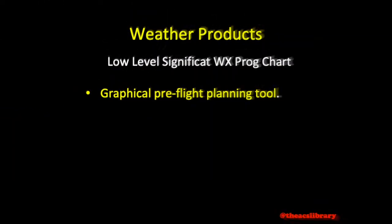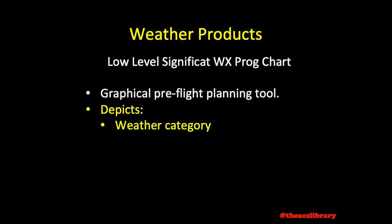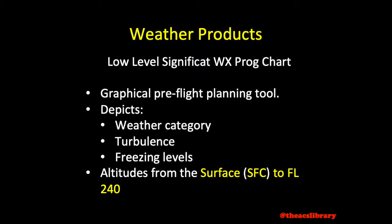Serving as a pre-flight planning tool, low-level significant weather prognostic charts depict in-flight hazards to include weather flying categories, turbulence, and freezing levels for altitudes at and below flight level 240, or 24,000 feet MSL. The FAA states that more accurate and timely products should be used for actual pre-flight planning purposes, such as METARs and TAFs.